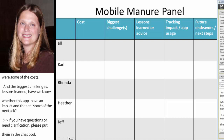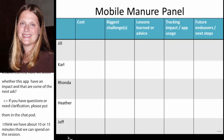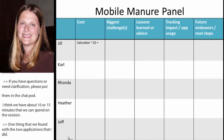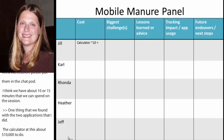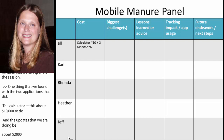The two apps that I did — the calculator app was about $10,000 to build, and the new updates we're adding will be another $2,000 or so. And then the record-keeping one was about $6,000. So that's kind of what you'd look at for an app that does things similar to that.